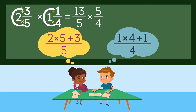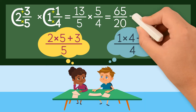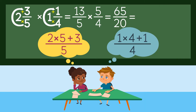Now we multiply the two improper fractions. First, we multiply the numerators to get 65. Next, we multiply the denominators to get 20. Now we have to convert the improper fraction into a mixed number. To do that, we divide 65 by 20 and get 3 and 5 over 20. We can simplify the fraction part by dividing both the numerator and the denominator by 5. We get 3 and 1 fourth.